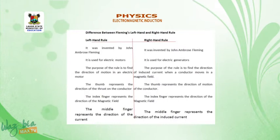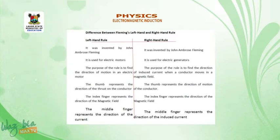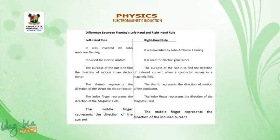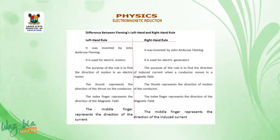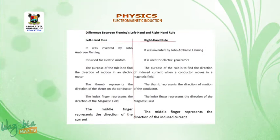Under the left hand rule, the thumb represents the direction of the thrust on the conductor. Under the right hand rule, the thumb represents the direction of motion of the conductor. Under the left hand rule, the index finger represents the direction of the magnetic field. Under the right hand rule, the index finger also represents the direction of the magnetic field. Under the left hand rule, the middle finger represents the direction of the current. Under the right hand rule, the middle finger represents the direction of the induced current.